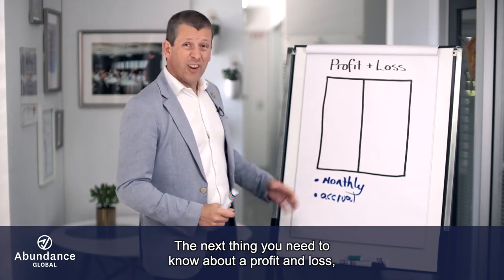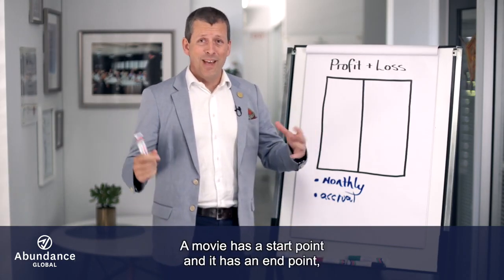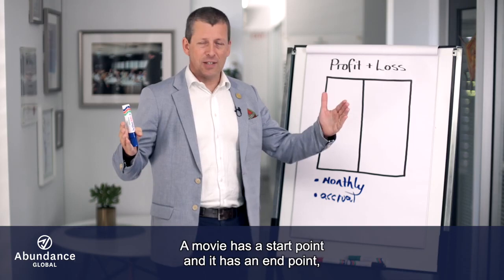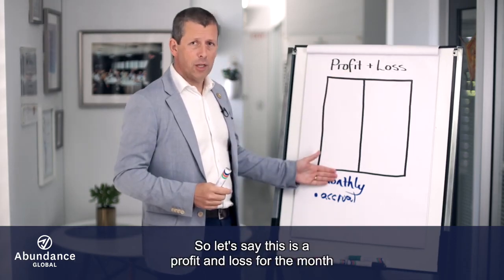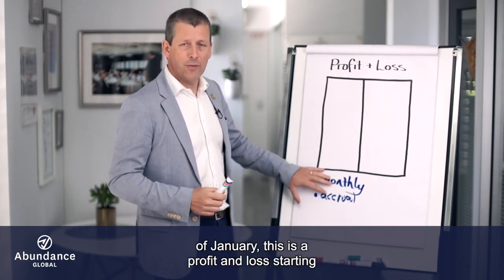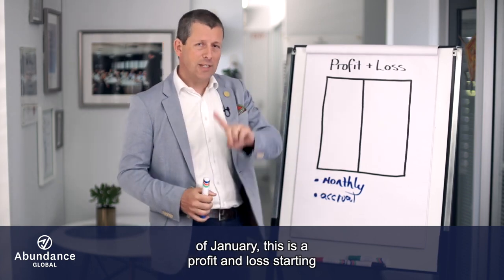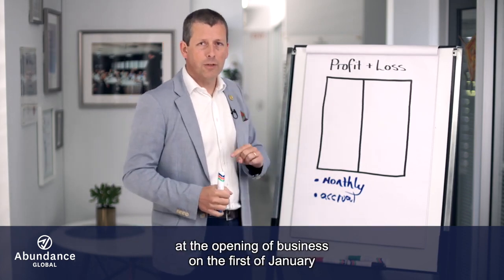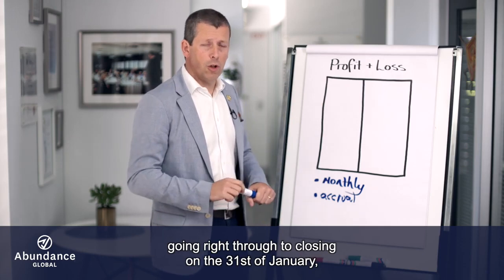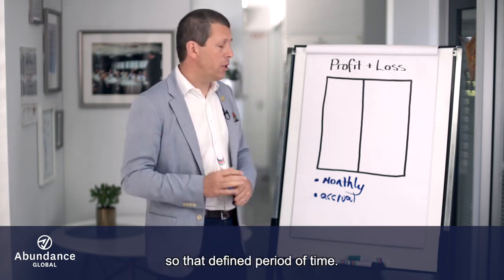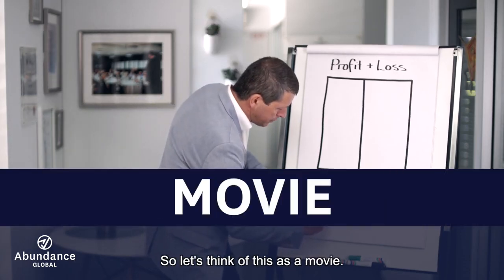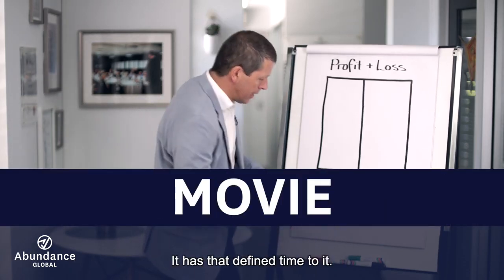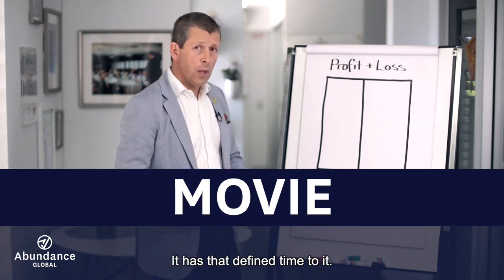The next thing you need to know about a profit and loss: it's kind of like a movie. A movie has a start point and it has an end point, and it's exactly the same with a profit and loss. So let's say this is a profit and loss for the month of January — it starts at the opening of business on the 1st of January, going right through to closing on the 31st of January. It's that defined period of time.